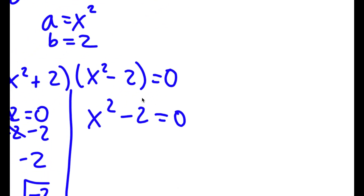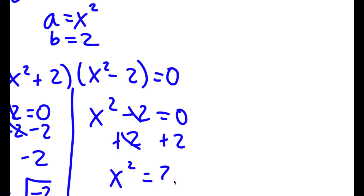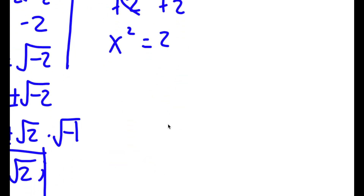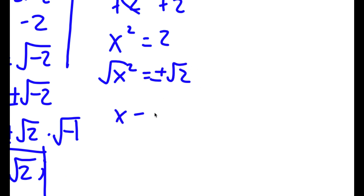For x squared minus 2 equals 0, I add 2 on both sides — these two cancel out — and I get x squared is equal to 2. Now if I take the square root on both sides, I get x is equal to positive or negative square root of 2.